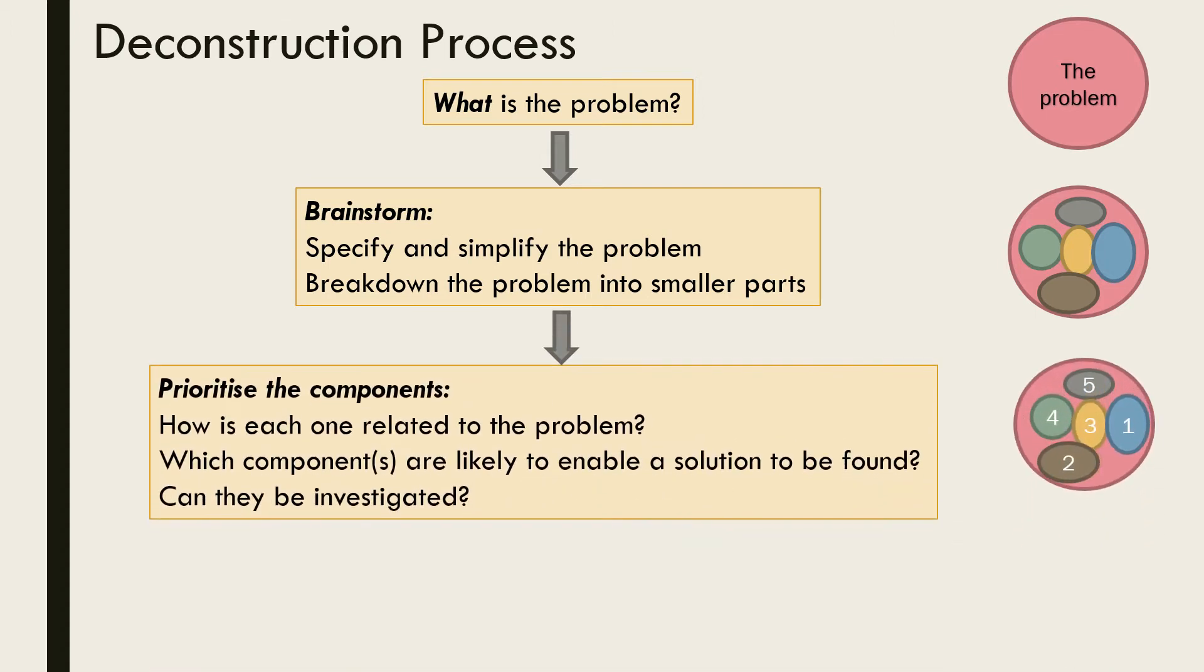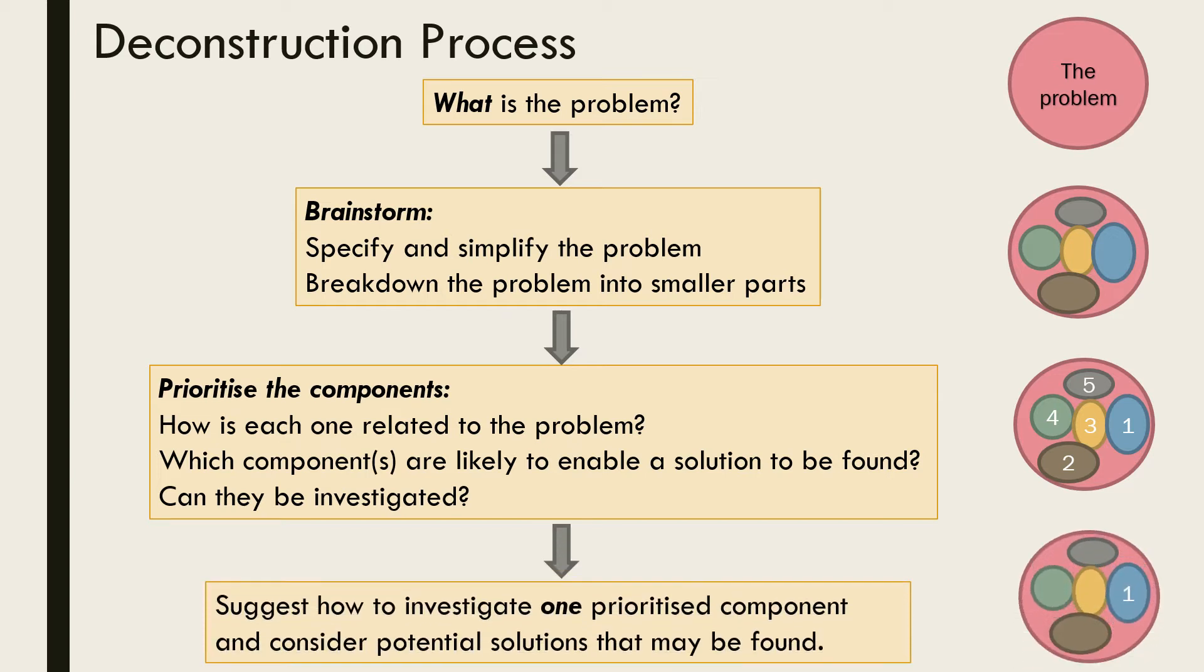The third step is to prioritize each component. Examine how each one is related to the problem. Which component is likely to enable a solution to be found, and can it be investigated? Once you have chosen and justified your prioritized component, suggest how it could be investigated. Consider any potential solutions that may be found.